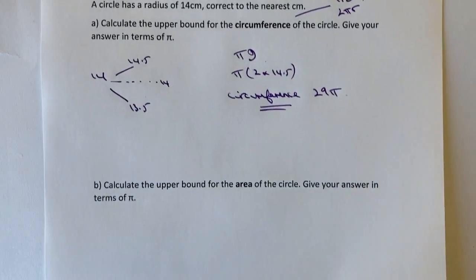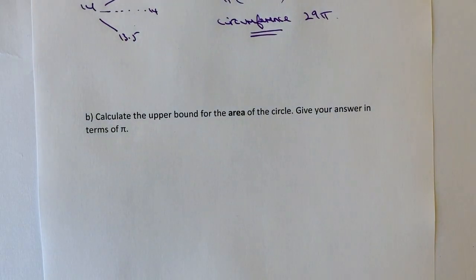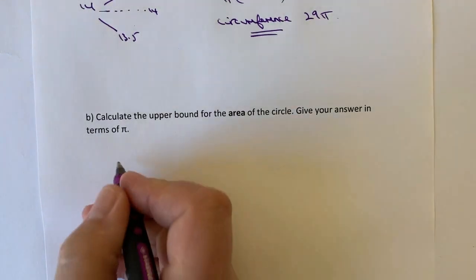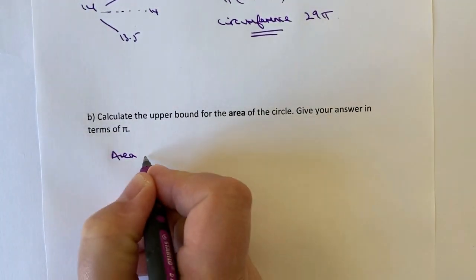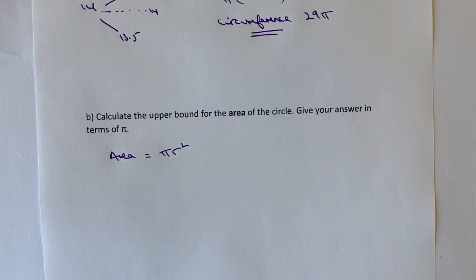Let's have a look then at the upper bound for the area of the circle. Again, let's have a look at the formula we need. The area of a circle, I remember it as πR². Some people might say π times R times R, and that's perfectly fine as well.